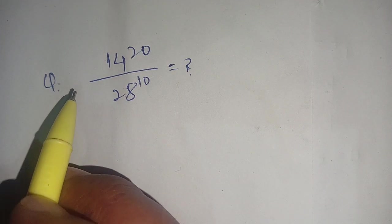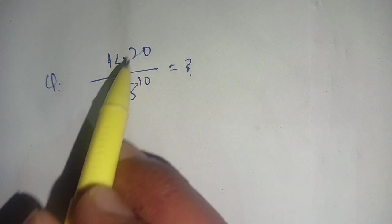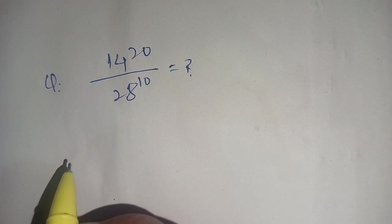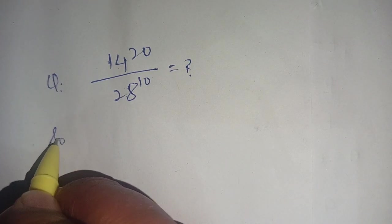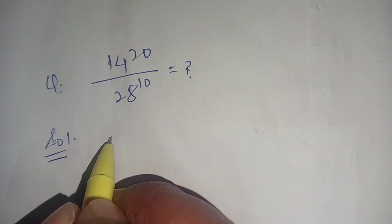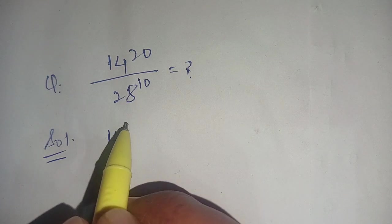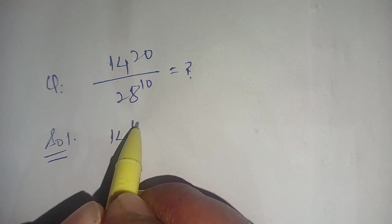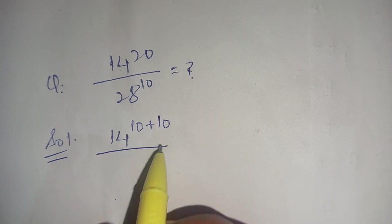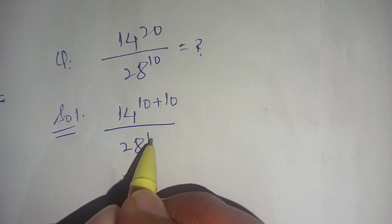Hello everyone. In today's video we are going to simplify 14 power 20 over 28 power 10. Let us solve this. First of all, we write the solution — we can write it as 14 power 20, and we break down 20 as 10 plus 10, so it becomes 14 power (10 plus 10), divided by 28 power 10.